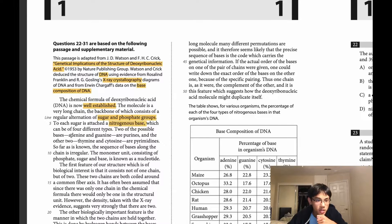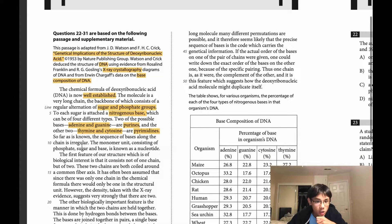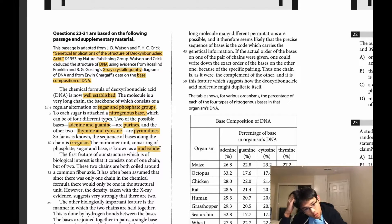Two of the possible bases, adenine and guanine, are purines. And the other two, thymine and cytosine, are pyrimidines. So far as is known, the sequence of bases along the chain is irregular. The monomer unit consisting of phosphate, sugar, and base is known as a nucleotide. So here, scientific jargon. As long as we can identify adenine and guanine as purines, thymine and cytosine as pyrimidines, then I think we should be good to go here.